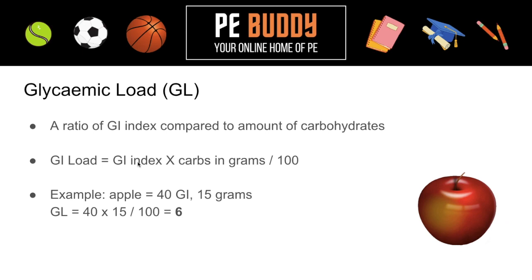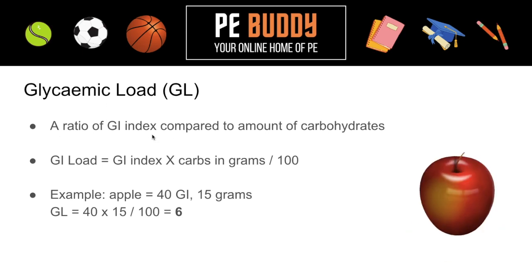Now we're going to move on to glycemic load. This is a ratio of the GI index compared to the amount of carbohydrates. The equation is: glycemic load equals GI index multiplied by the amount of carbs in grams, divided by 100. For example, an apple has a GI index of about 40, and let's say there are 15 grams of carbohydrates in the apple. Plugging those numbers in: 40 times 15 divided by 100 equals 6. So the glycemic load of an apple is 6.